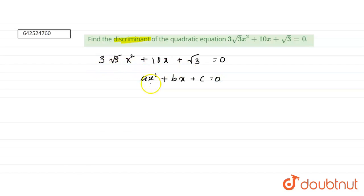If we compare this equation with this equation, we get a equals 3 root 3 because x square coefficient is a and here x square coefficient is 3 root 3. So, a equals 3 root 3, b equals 10 and c equals root 3.